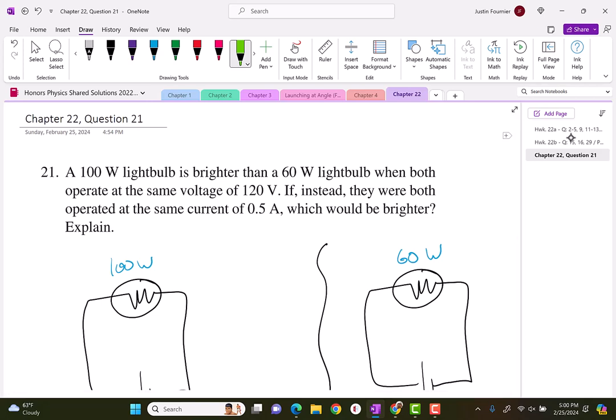It says a 100-watt light bulb is brighter than a 60-watt light bulb when both operate at the same voltage of 120 volts. Anything that comes out of an American outlet is 120 volts. If instead they were both operated at the same current, which would be brighter? Explain.